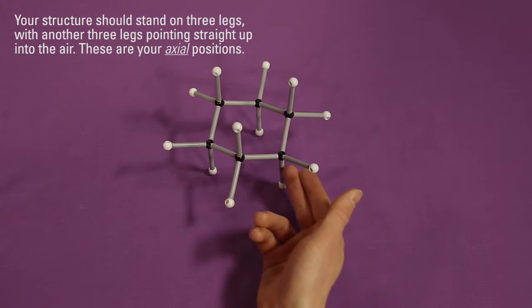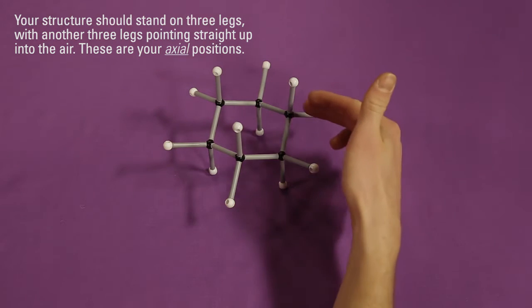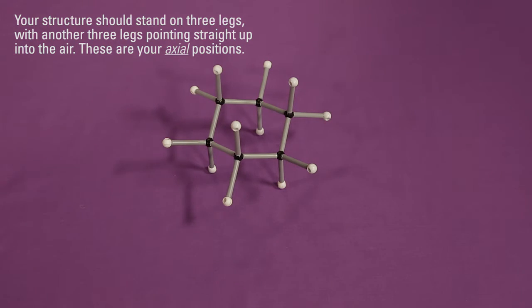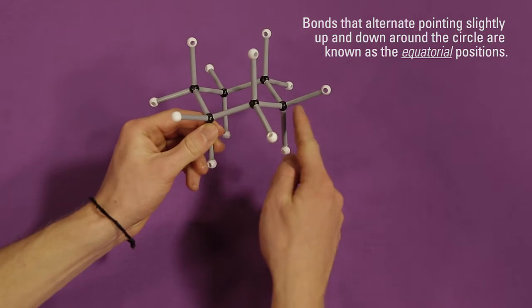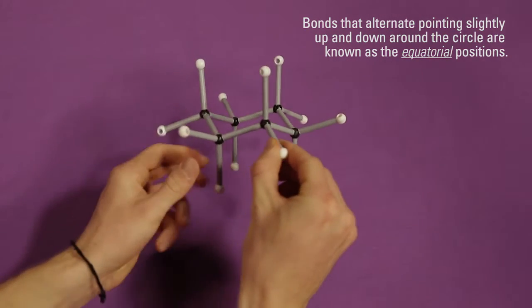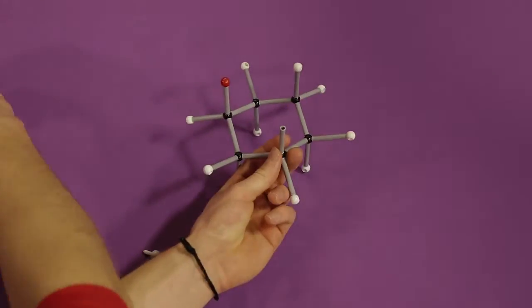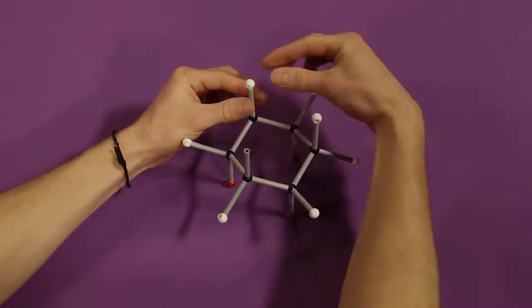Your structure should stand on three legs, with another three legs pointing straight up in the air. These are your axial positions. The bonds that alternate pointing slightly up and down around the circle are known as the equatorial positions. You can use different colors for axial and equatorial hydrogens to make it easier to visualize.